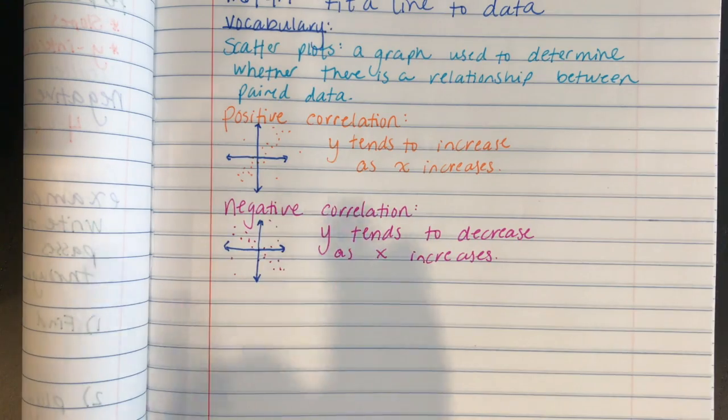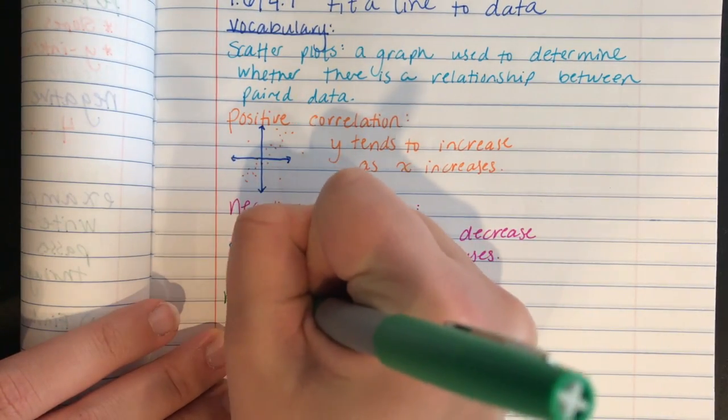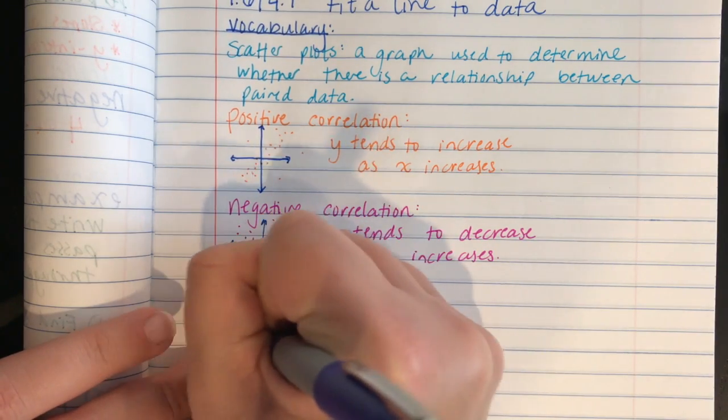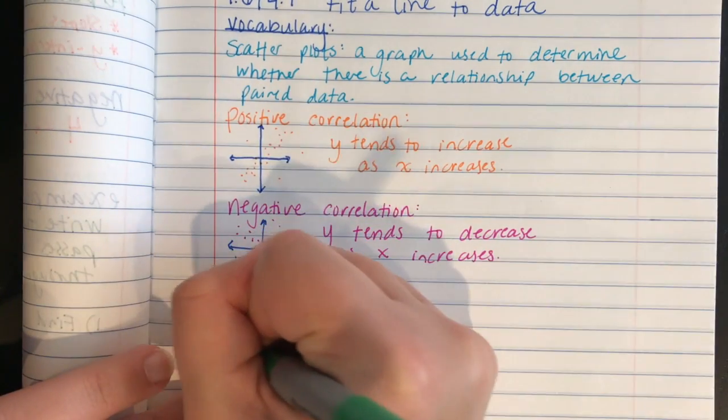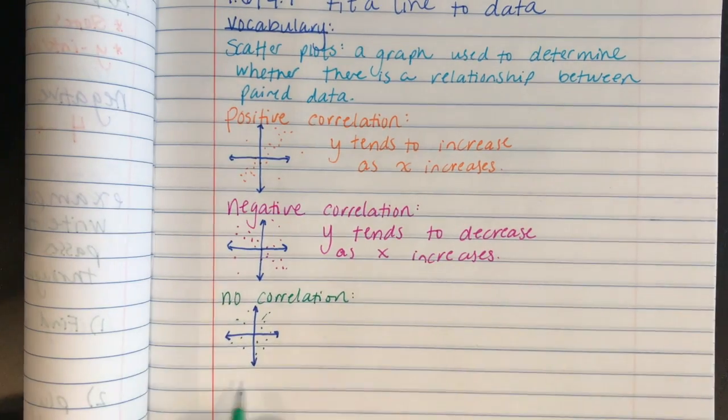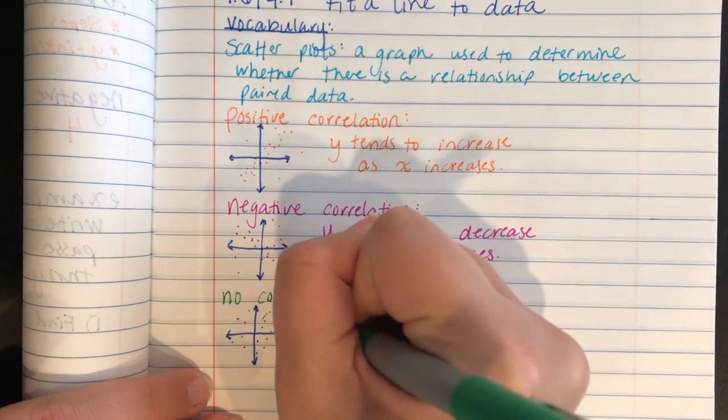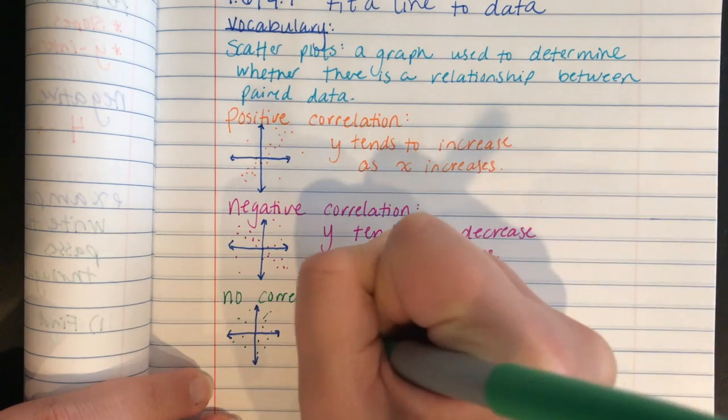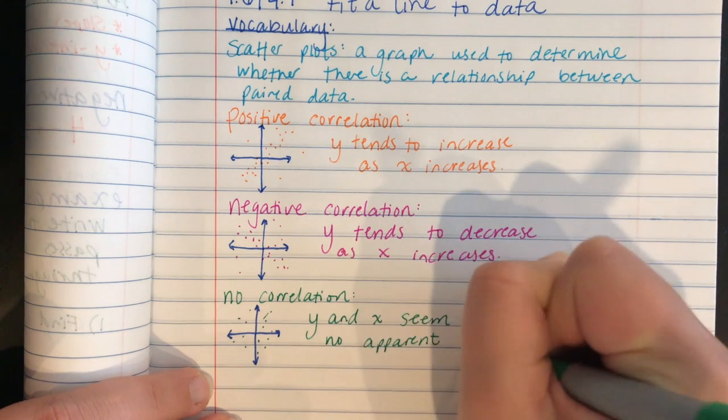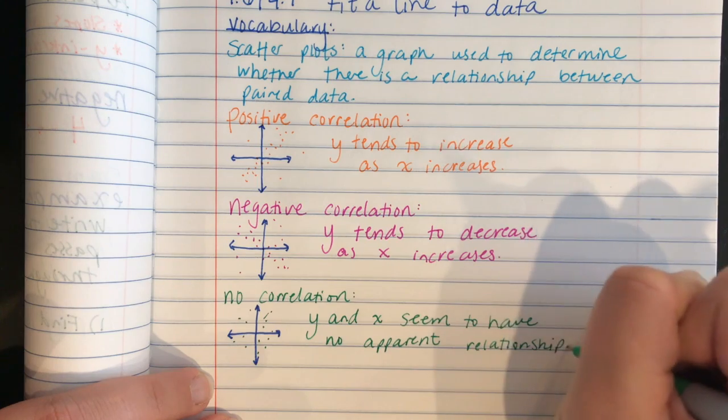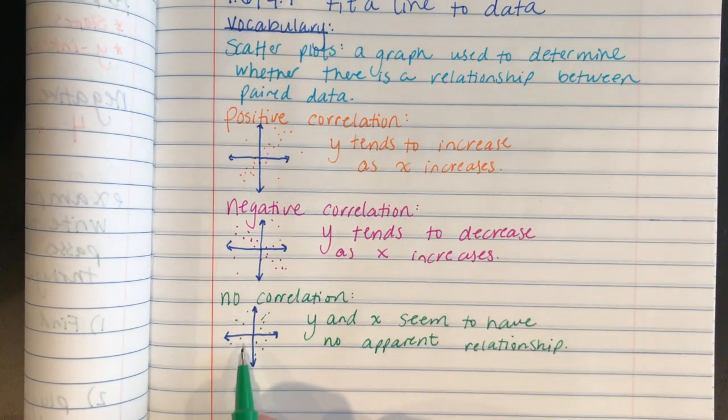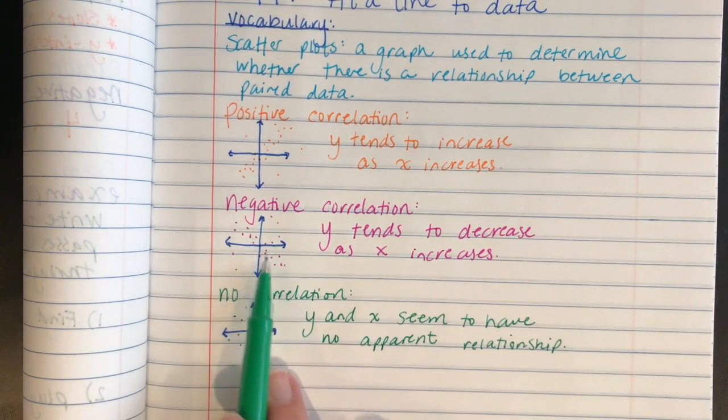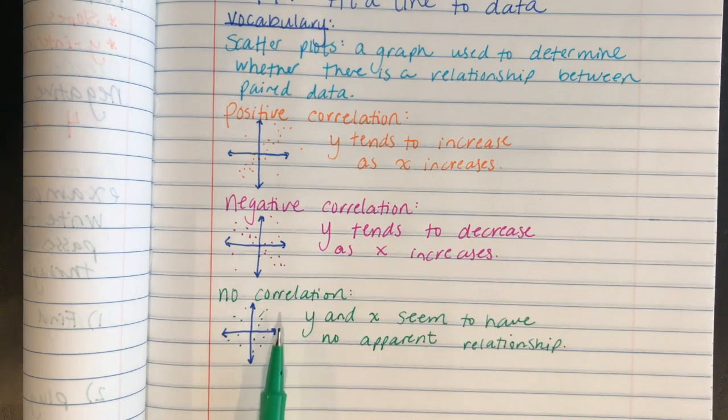And then the last kind of correlation we can have is no correlation. So if I had a graph, my points would be all over the place and there's really no correlation, they're just scattered about. So this would be an example of y and x seem to have no apparent relationship. So even though it might look like maybe over here it looks positive and maybe over here it looks negative, we want to see a really big trend. So here even though there's a few that maybe don't fit, a majority do. So with a no correlation, a majority don't fit any sort of trend.